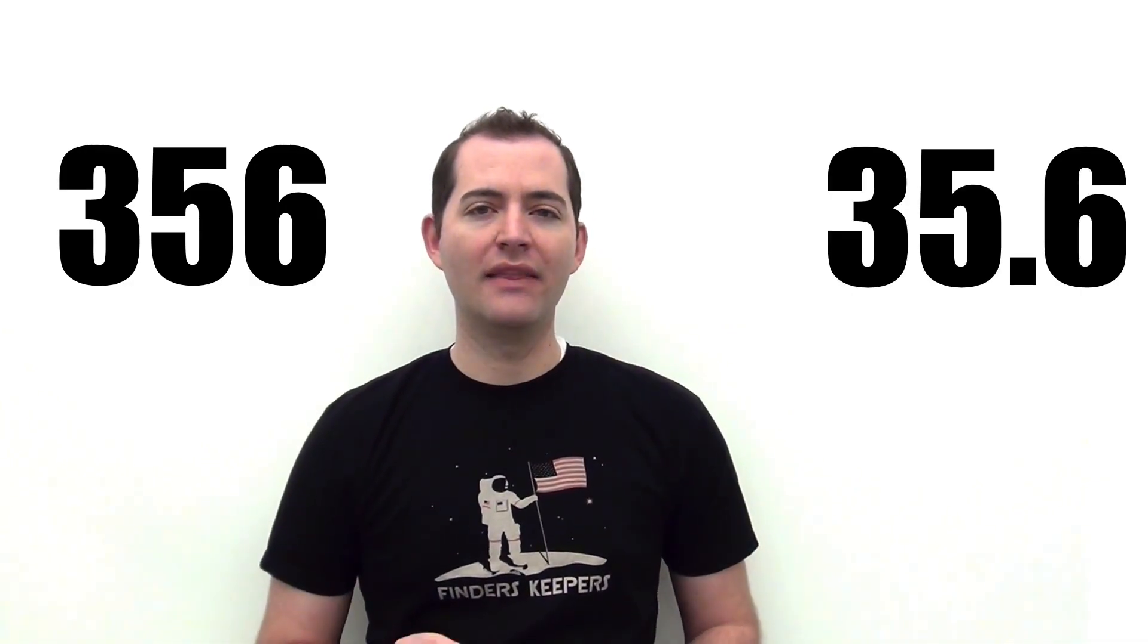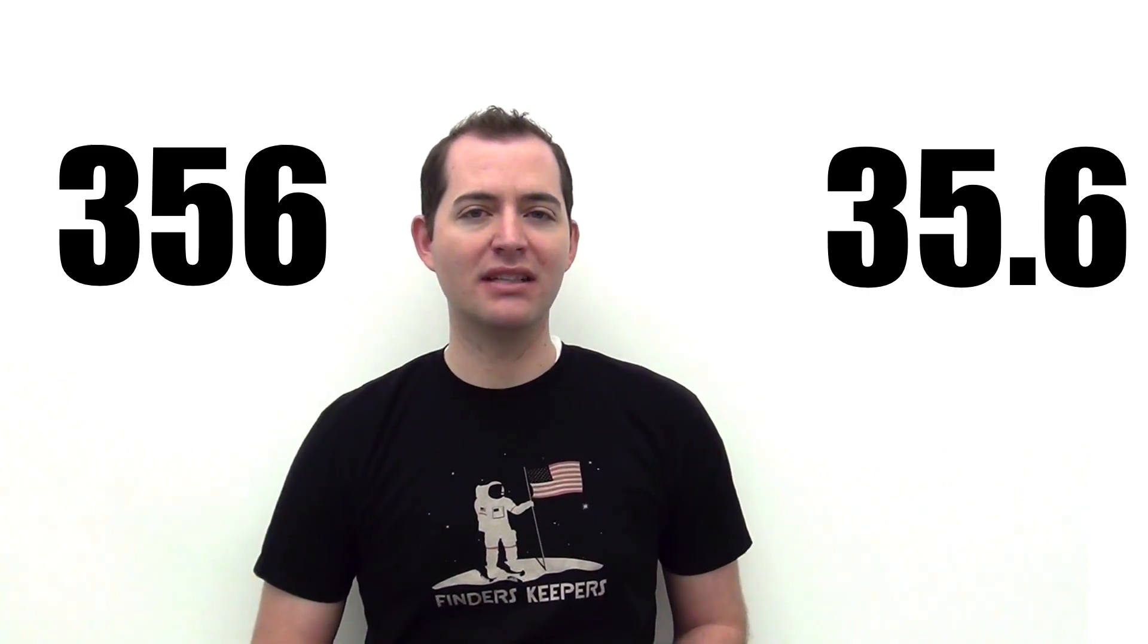Let's look at another example of abbreviating air pressures. Let's say a station model shows an air pressure of 356. To convert this to standard millibars of air pressure, we would first need to add the decimal and then we would need to decide if adding a 9 or a 10 makes more sense.